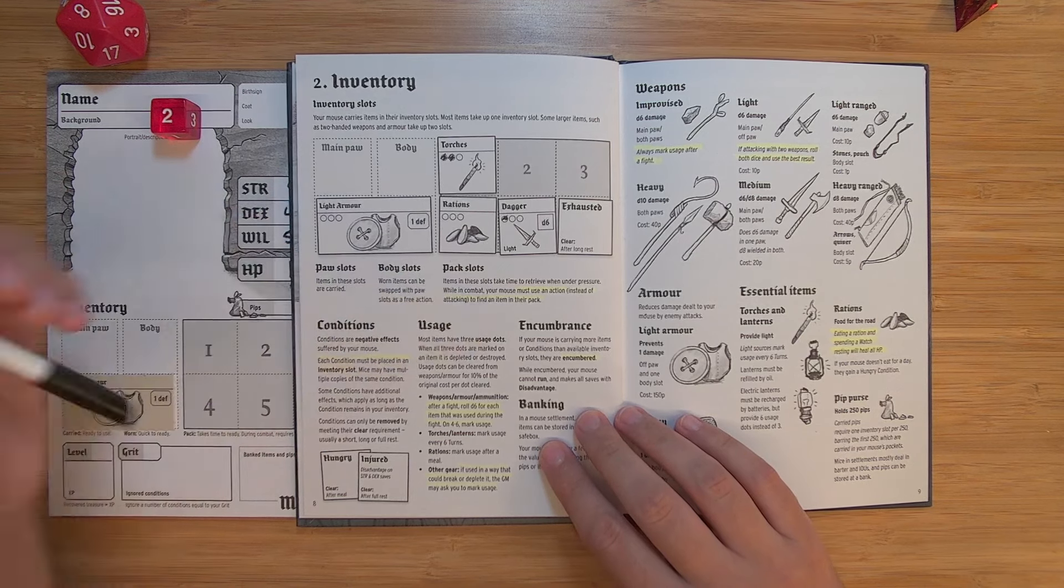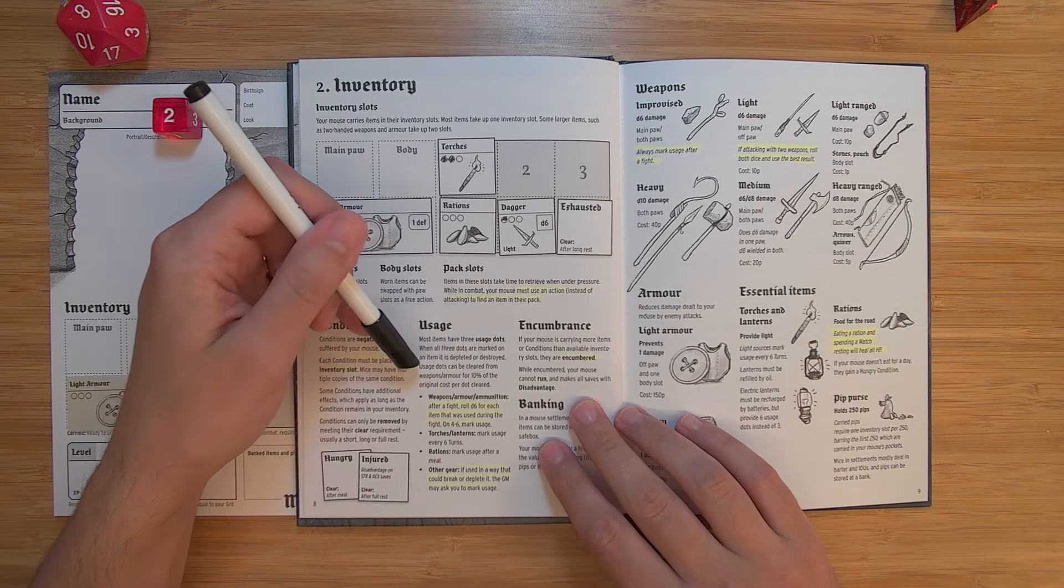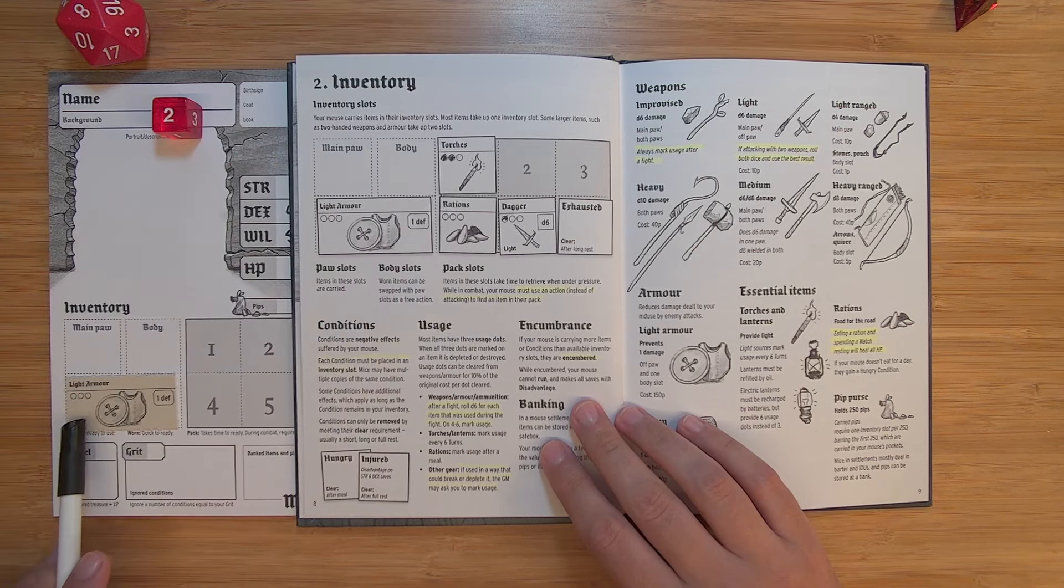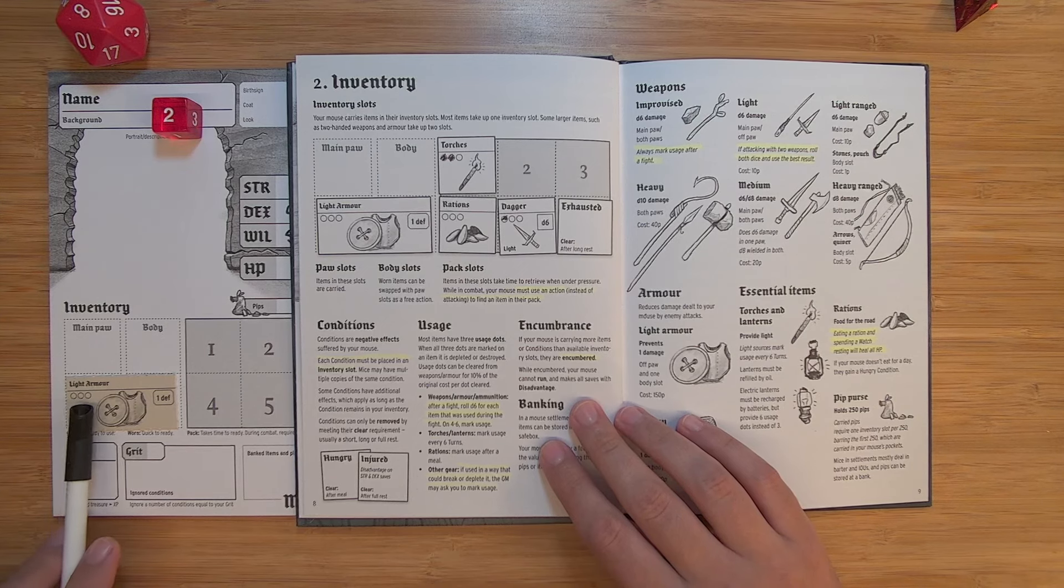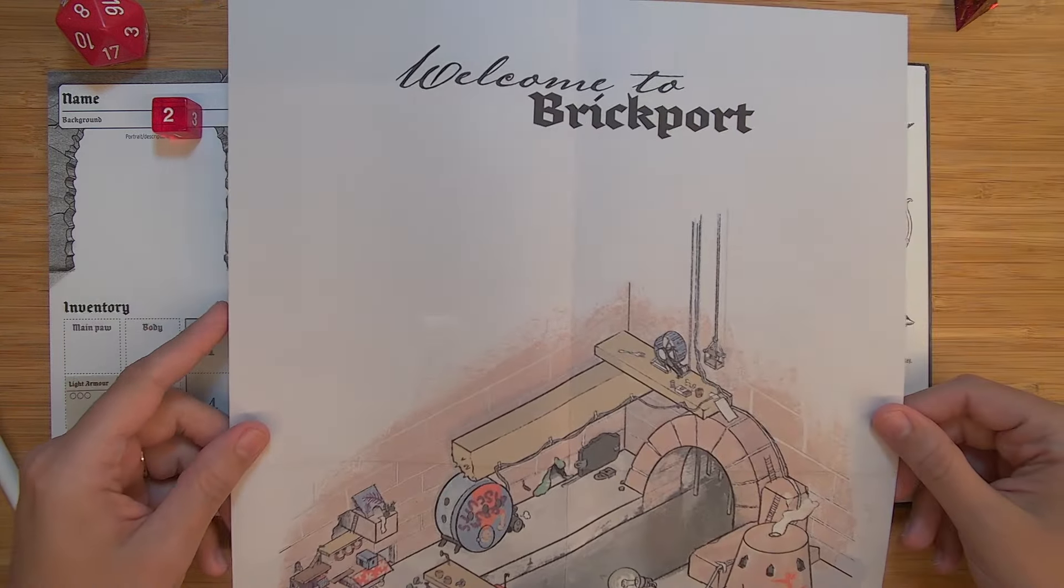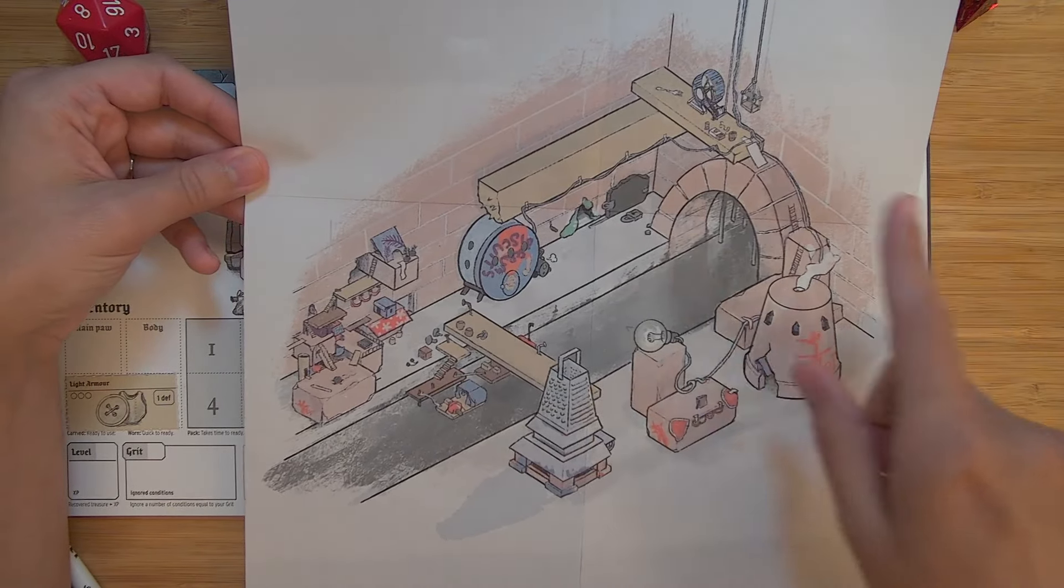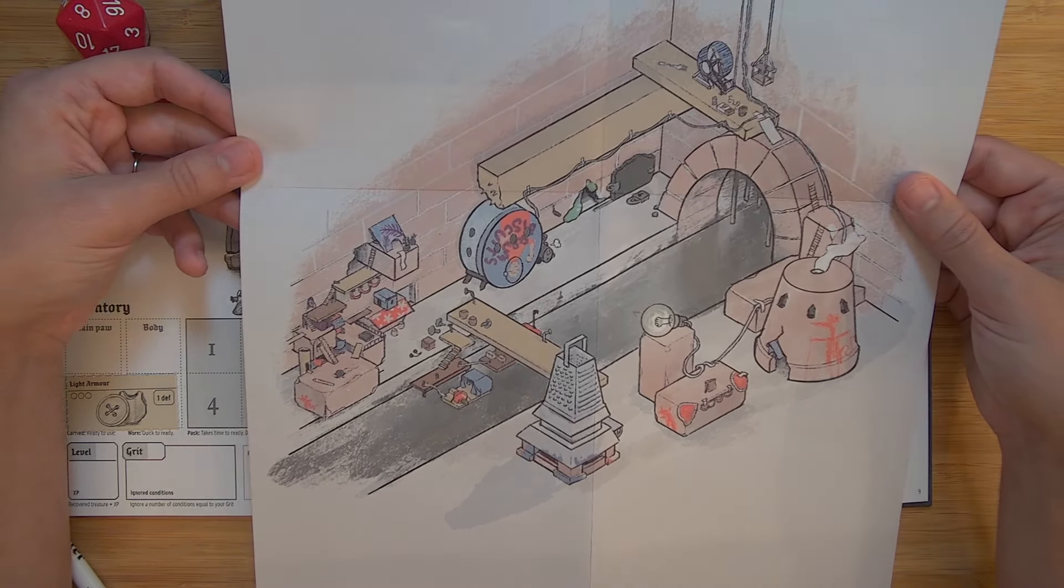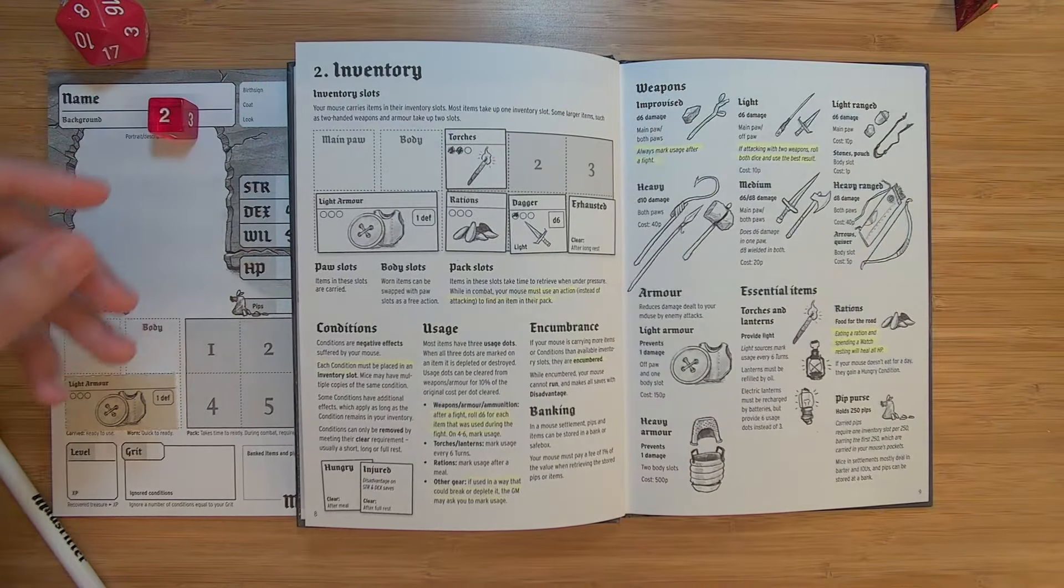And you can clear, when you clear the conditions, you actually remove it from your inventory slot and you can hold something else there. Conditions can only be removed by meeting their clear requirement, usually a short, long, or full rest. Most items have three usage dots, which is what we are showing right here. When all three dots are marked on an item, it is depleted or destroyed. Usage dots can be cleared from weapons or armor for 10% of the original cost per dot cleared. So if my light armor was destroyed, I can pay 30% of the light armor cost when I'm back in the town to fix it. And speaking of the town, there is this super cute little map, Welcome to Brickport. And there is a keyed guide for all the different locations and adventurer hooks and different people you can talk to in Brickport. Which I just think is so absolutely charming. You can just imagine your little mice living here or coming there to rest as they are on their adventures.